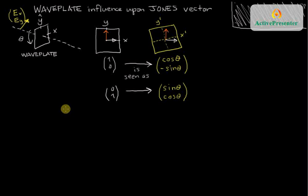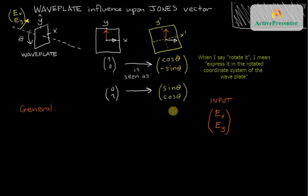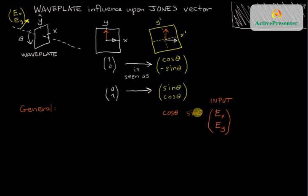And now we can just write this out in general. Of course, there's a general thing. And the general case here, if I start off with some state, EX, EY, as my input, and I rotate it, the general rotation turns out to be this matrix, cos theta, sine theta, negative sine theta, cos theta. This is what I would refer to as the rotation effect of rotating anything, but in this case, the wave plate, through an angle theta.